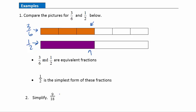Now let's take a look at another equivalent fraction. So 3/6, 1/2, and also 9/18ths are all equivalent fractions — they're all equal to 1/2. Let's take a look at how we're going to simplify 9/18ths down to its simplest form, which is 1/2.